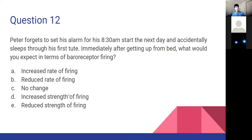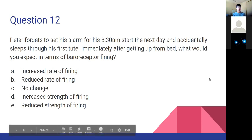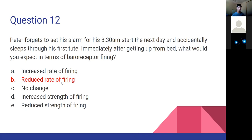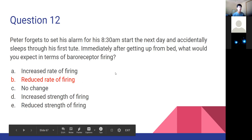Question eleven: what would we expect in terms of baroreceptor firing when we immediately get up from bed - going from horizontal to vertical? Answer B: reduced rate of firing. As we stand up, blood pressure temporarily decreases, resulting in less stretching and therefore a reduced rate of firing. This will then initiate the response to increase blood pressure to compensate for standing up.